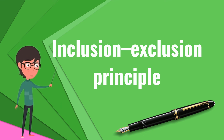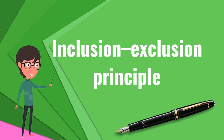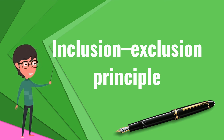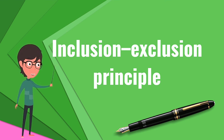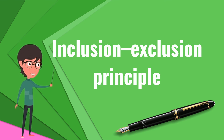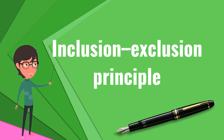As Giancarlo Rota put it: one of the most useful principles of enumeration in discrete probability and combinatorial theory is the celebrated principle of inclusion-exclusion. When skillfully applied, this principle has yielded the solution to many a combinatorial problem.